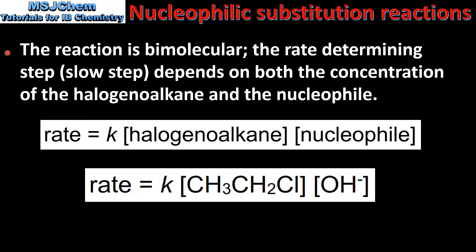Next we look at the molecularity of the reaction. The reaction is bimolecular — the rate determining step, which is the slow step, depends on both the concentration of the haloalkane and the nucleophile. Here we have the rate expression for the previous example. As you can see, the rate determining step depends on the concentration of the haloalkane and the hydroxide ion, which is the nucleophile.